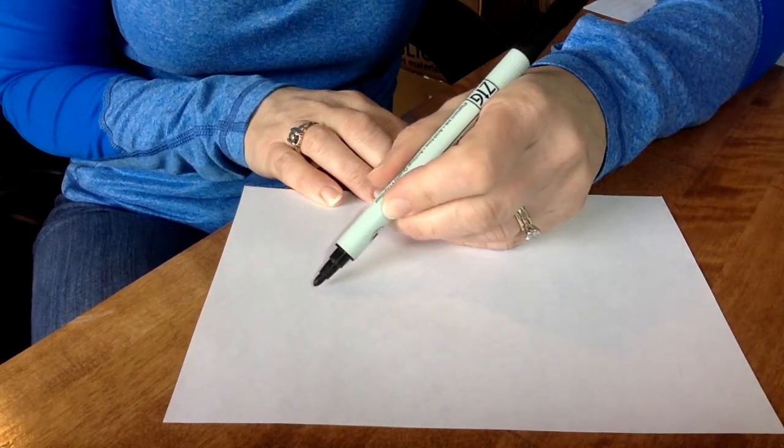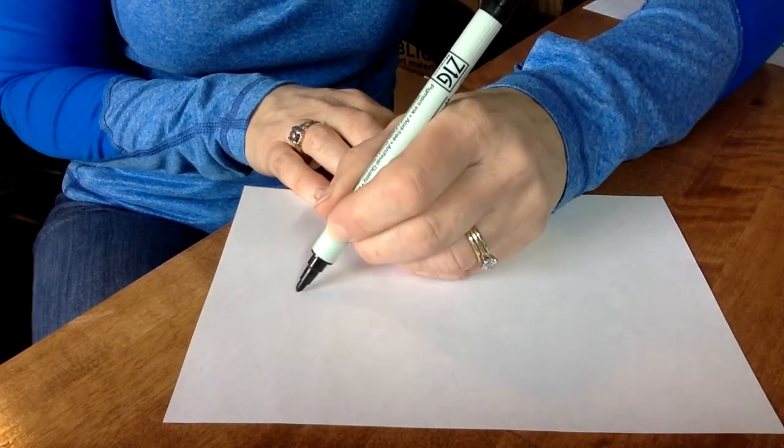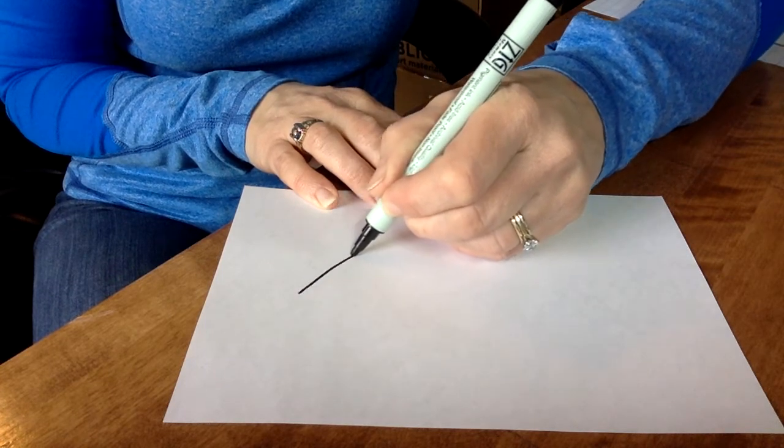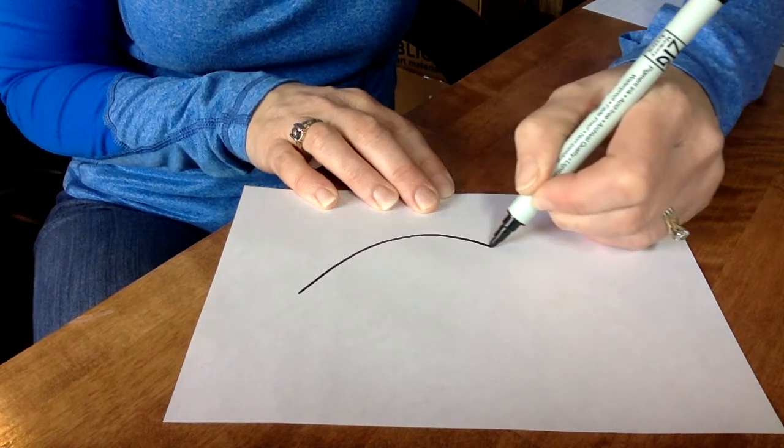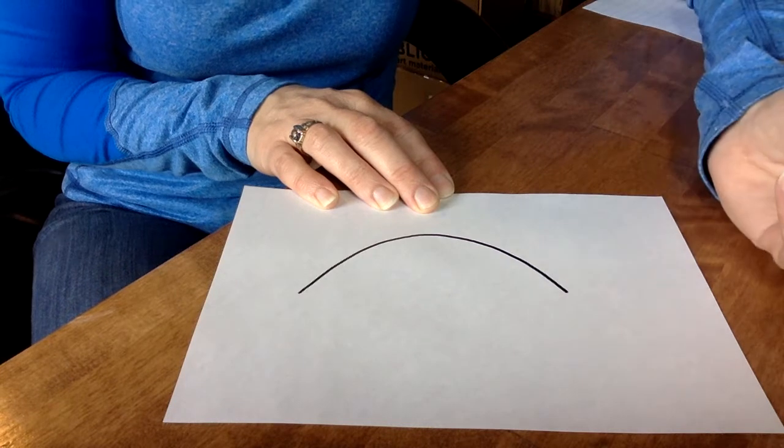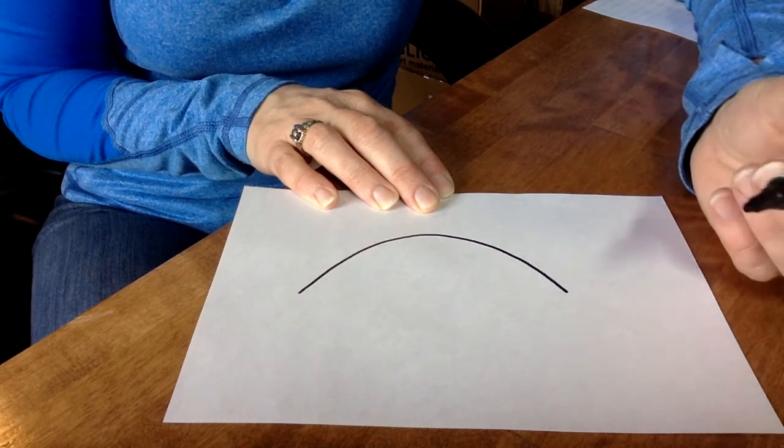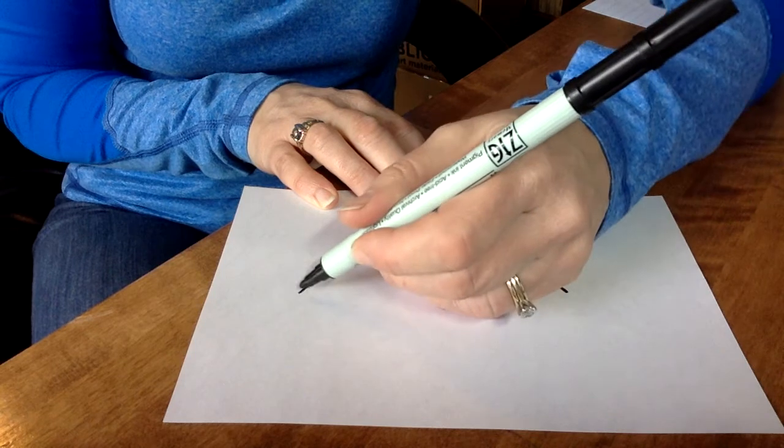To draw a fish, if you don't know how, I'm going to start by drawing a frowny face. We're doing a curved line in the shape of a frown. Then we're going to take a smiley face and connect it.